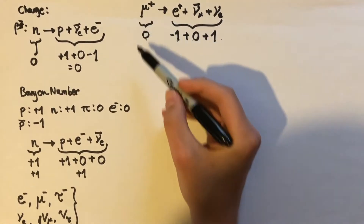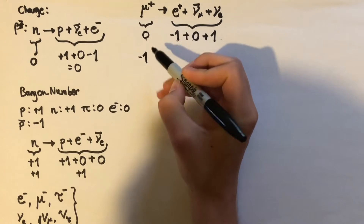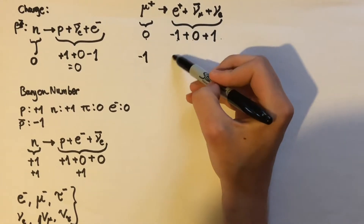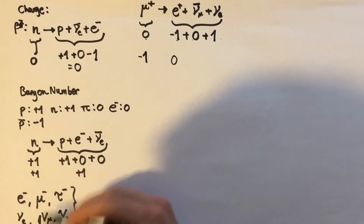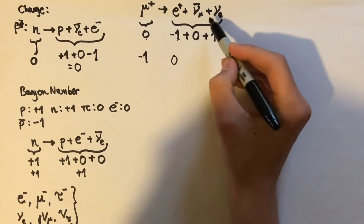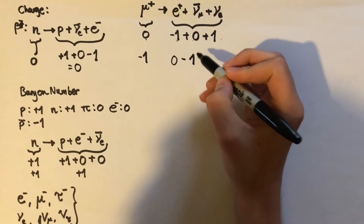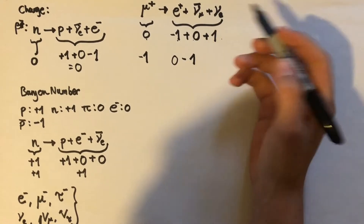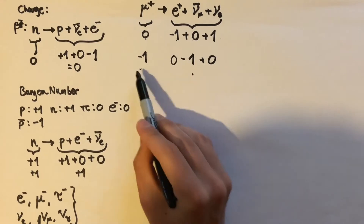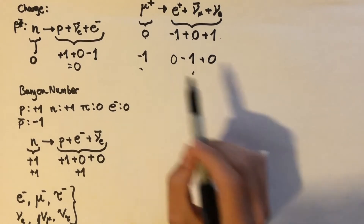Now what about mu lepton number? The positive muon is an antiparticle so it has a mu lepton number of minus one. On the right-hand side: the positron has nothing to do with mu so it's zero; the anti-mu neutrino is an antiparticle so it has a mu lepton number of minus one; and the electron neutrino has nothing to do with mu so it's zero. On both sides the mu lepton number is minus one, so mu lepton number is conserved before and after the reaction.